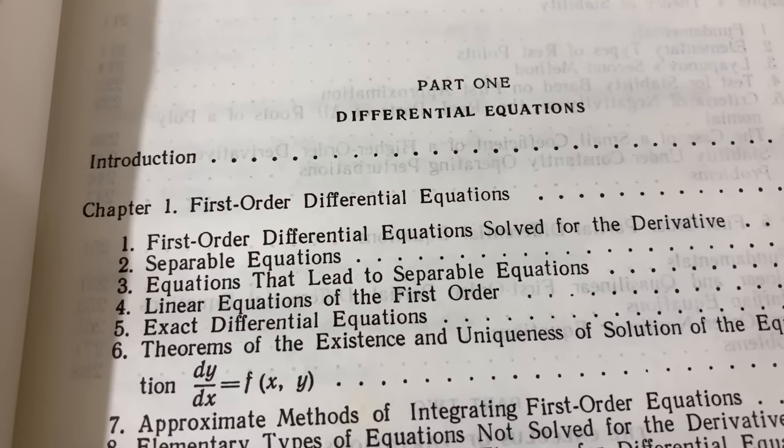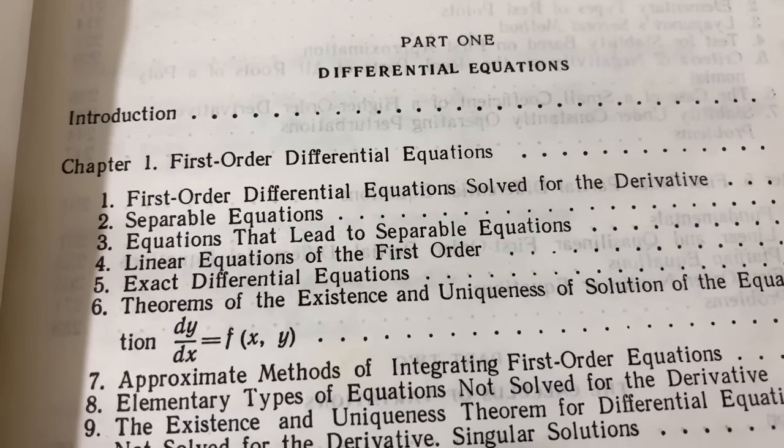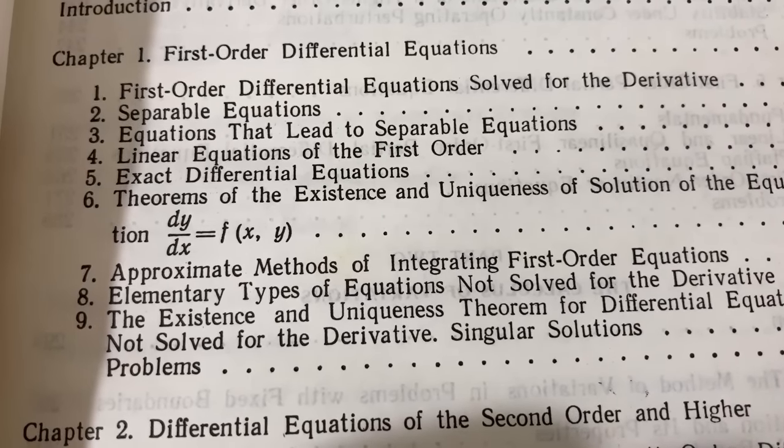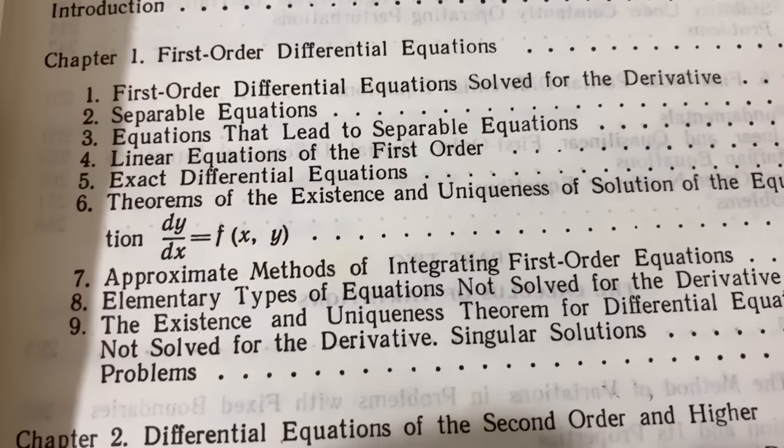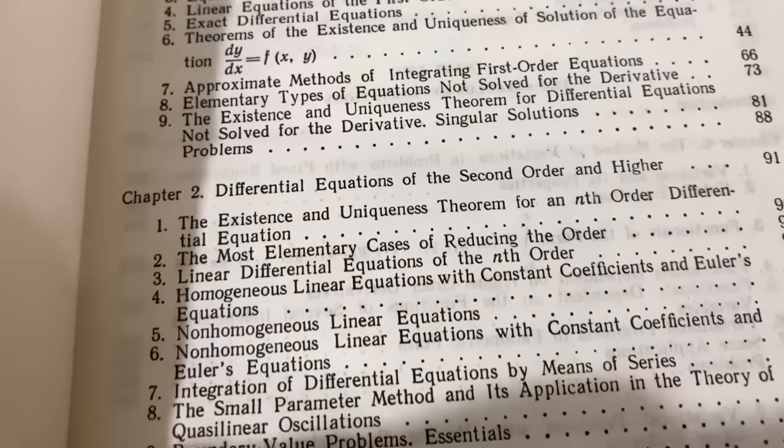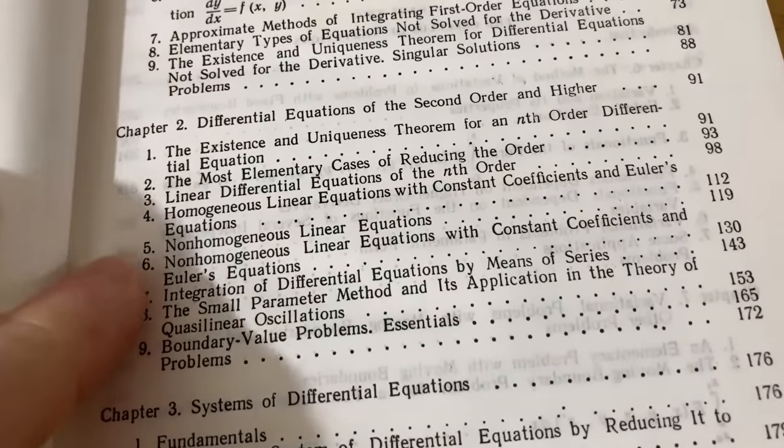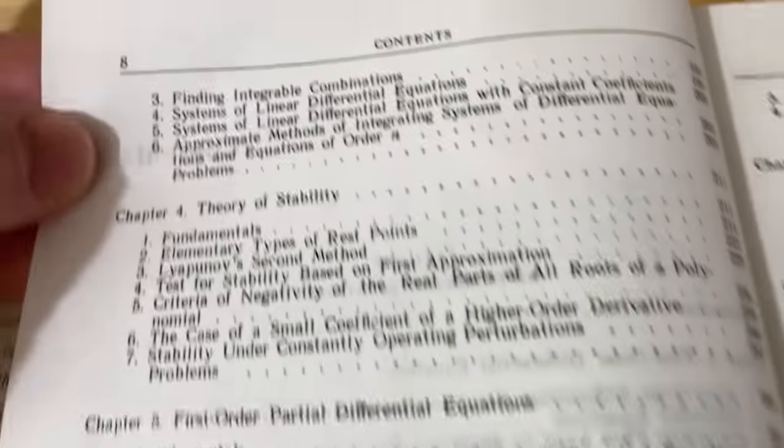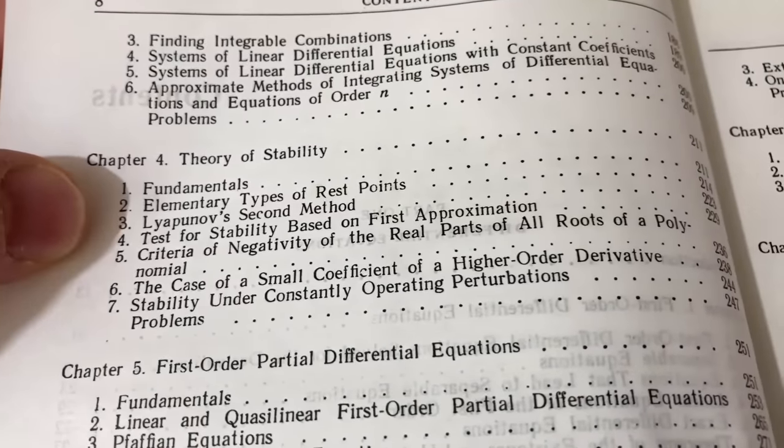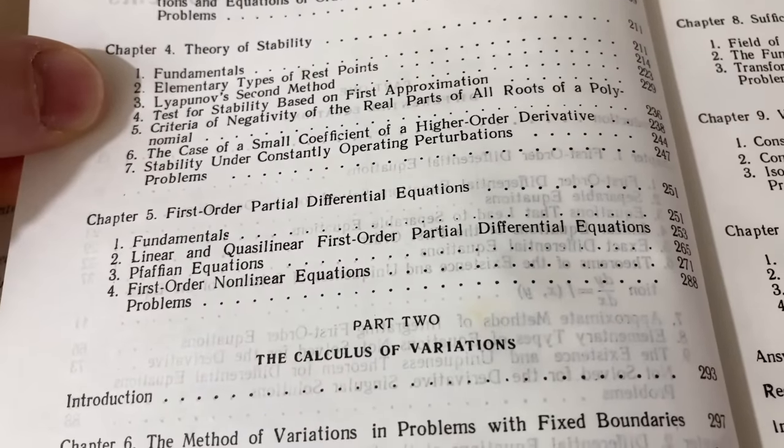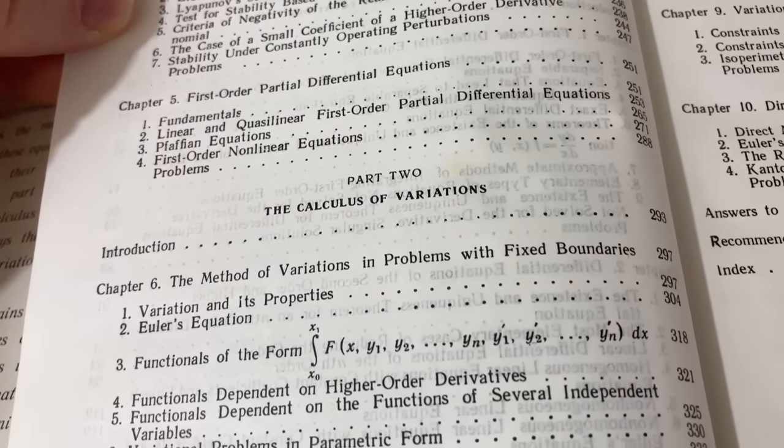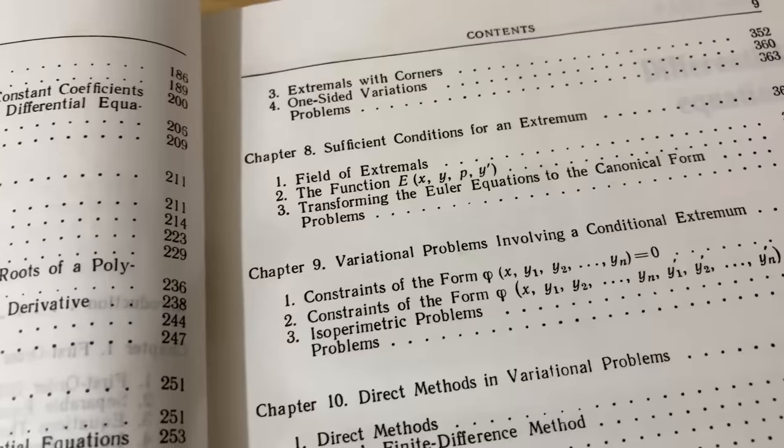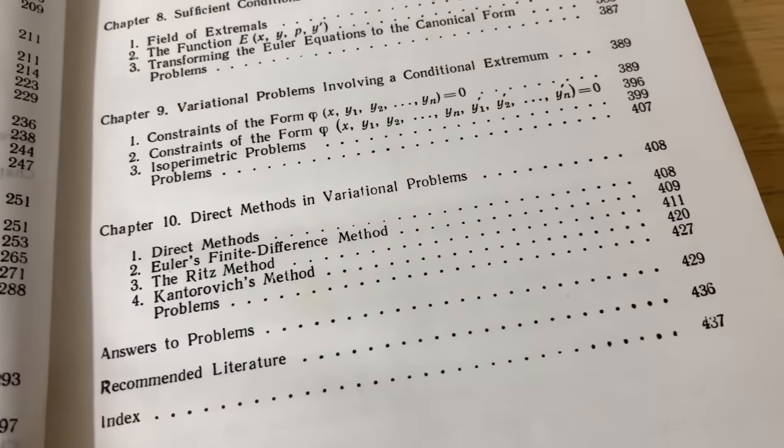These are the table of contents. Part one is on differential equations, so a lot of this material you would see if you took a class in college. Notice these topics are all very familiar if you've taken DE. So if you're studying differential equations today, these are things that you would actually learn. In theory, you could use this book to learn differential equations. Systems of differential equations, that's also sometimes covered in a course. Theory of stability might not be something you see in an introductory course. And then partial differential equations. Part two is on the calculus of variations. This is typically something you would not see in a differential equations course if you took one today. And it has answers to problems.